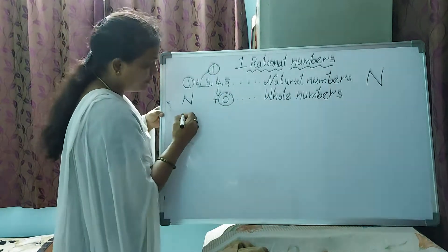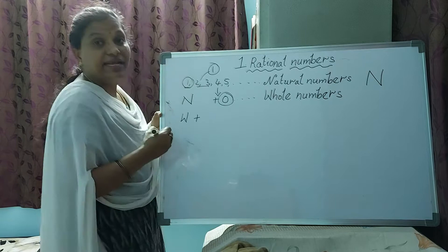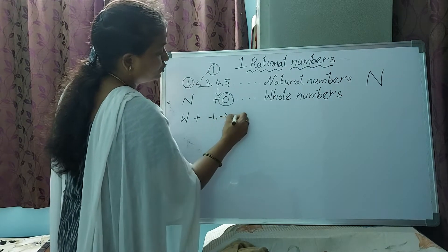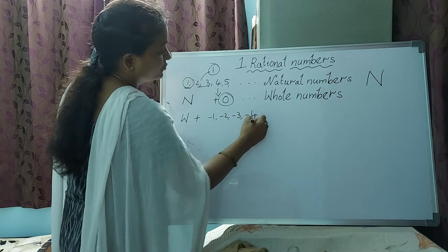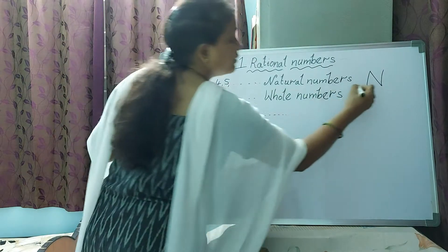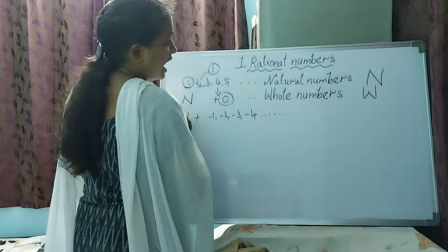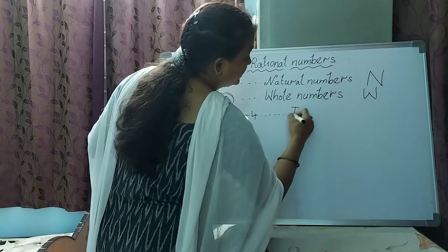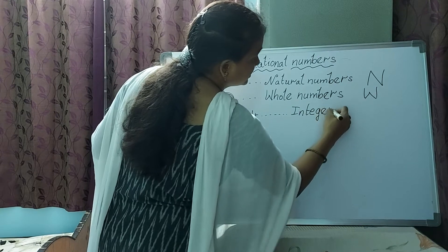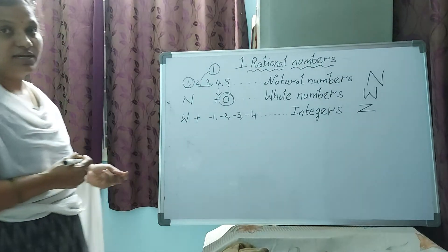Next: whole numbers plus negative numbers — that is, minus 1, minus 2, minus 3, minus 4, and so on — are called integers. Whole numbers are denoted by W, and integers are denoted by Z.